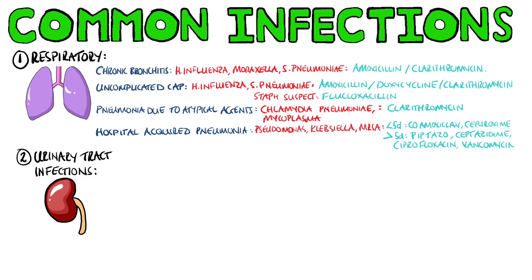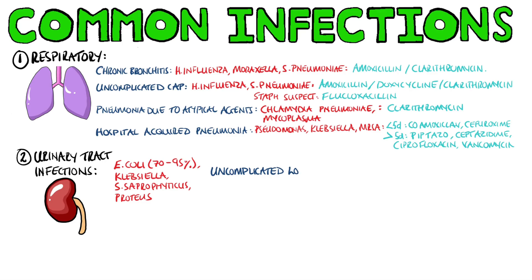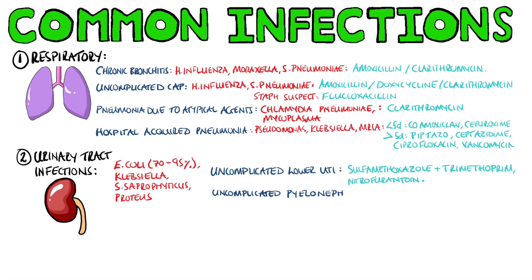For urinary tract infections, the most common causative organism is E. coli, but others include klebsiella and staphylococcus saprophyticus. An uncomplicated lower urinary tract infection is usually treated with sulfamethoxazole-trimethoprim or nitrofurantoin, while in uncomplicated pyelonephritis ciprofloxacin may also be used.